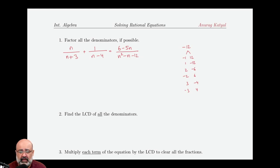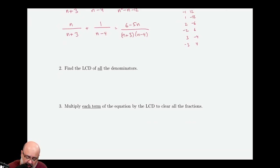We're looking for a sum that adds up to negative 1, which is 3 and negative 4. So this denominator will factor to n plus 3, n minus 4. Now we need to find the LCD of all the denominators, so I write n plus 3, n minus 4, n plus 3 times n minus 4.